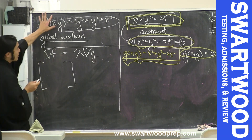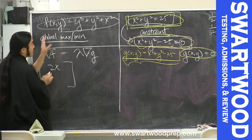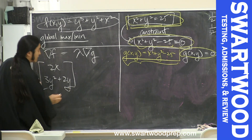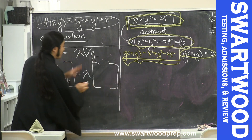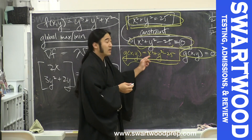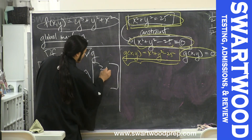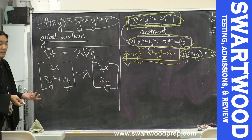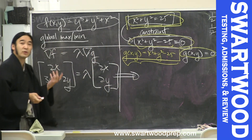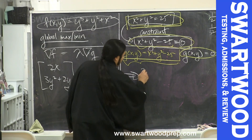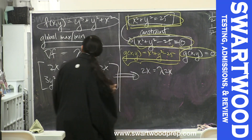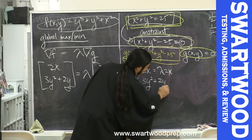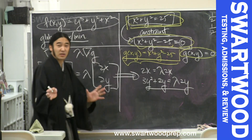The gradient of f: partial with respect to x is 2x, partial with respect to y is 3y squared plus 2y. We set that equal to lambda times the gradient of the constraint. The gradient of g: partial with respect to x is 2x, partial with respect to y is 2y. So component by component: 2x = lambda·2x, and 3y squared + 2y = lambda·2y.